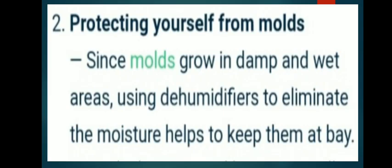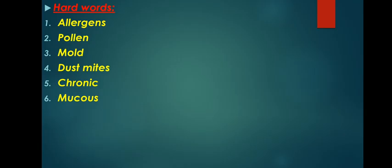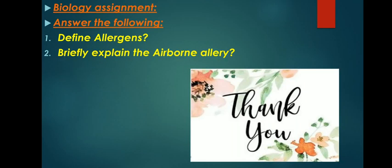Protecting yourself from mold: Since mold grows in damp and wet areas, using dehumidifiers to eliminate moisture helps to keep it at bay. Fixing leaky pipes and loose slabs will also reduce humidity levels and make your home less appealing to mold spores. Protecting yourself from dust mites and pet dander: It is impossible to completely eliminate dust and pet dander, especially if you have a pet. However, there are certain steps that can be taken to reduce their effect. Using a vacuum cleaner with a good HEPA filter will remove most of the dust and pet dander. A second option would be to install an air purifier to effectively remove pollution from the home.